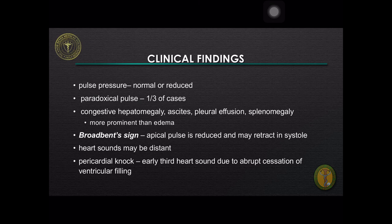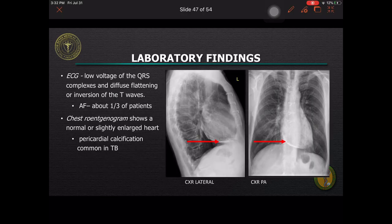The apical pulse is reduced and may retract in systole — this is called the Broadbent sign. Heart sounds may be distant and an early third heart sound due to abrupt cessation of ventricular filling is heard, which is the pericardial knock. The electrocardiogram frequently displays low voltage of the QRS complexes and diffuse flattening or inversion of the T-waves. Atrial fibrillation is seen in about one-third of patients.